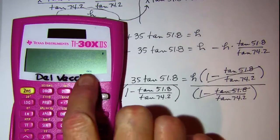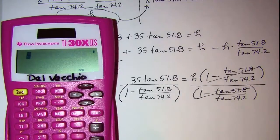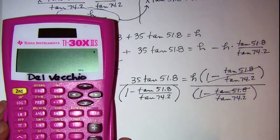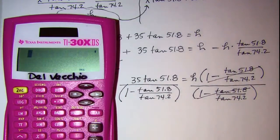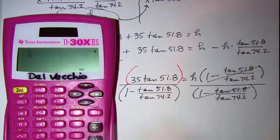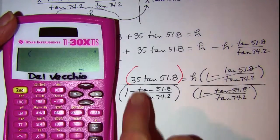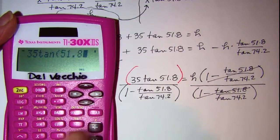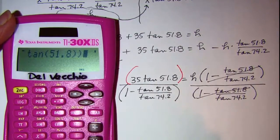I need to make sure I'm in degrees. Now when I have a complex fraction like this, I need to put the numerator and the denominator in parentheses. So I'm going to open parentheses, and then I have 35 tangent 51.8. Close the argument on tangent, and then close the parentheses in the numerator.